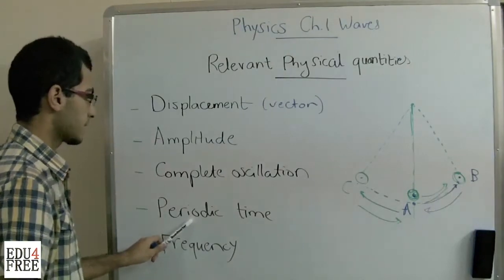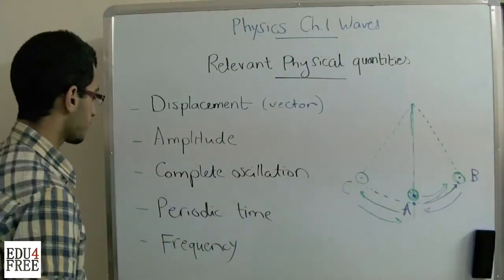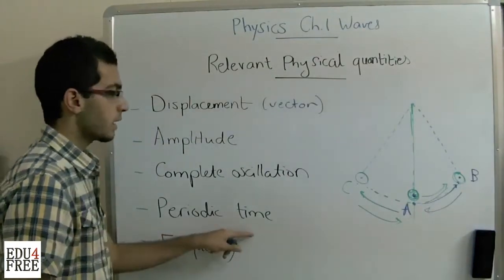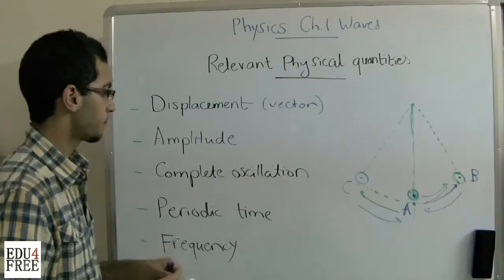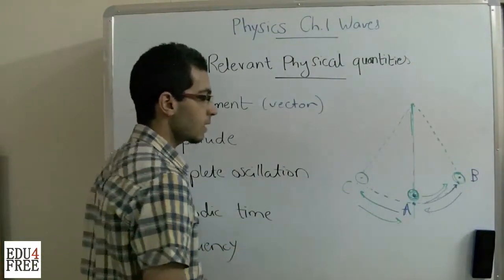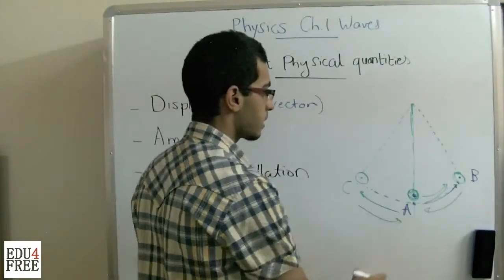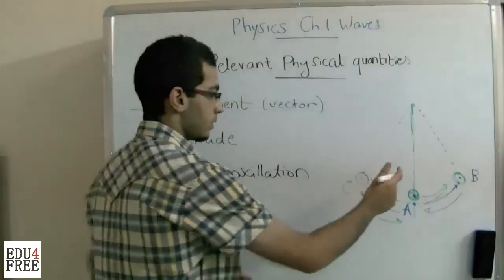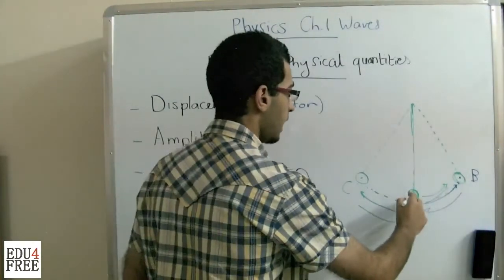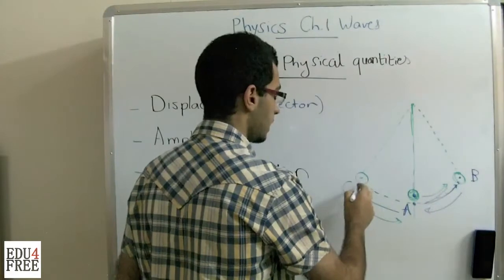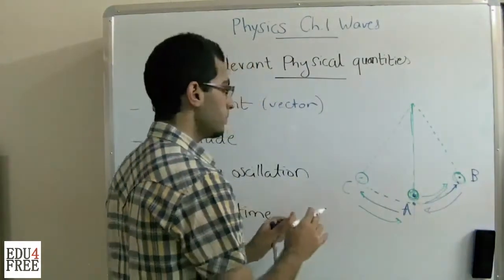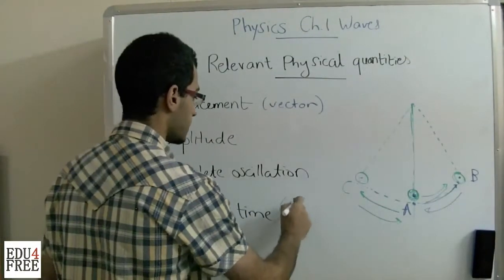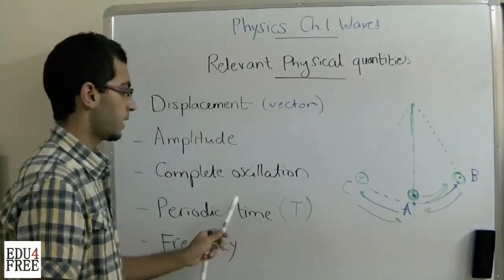The fourth physical quantity is the periodic time. The periodic time is the time needed by a vibrating object to make one complete oscillation. So the pendulum moves from A to B, from B to A, A to C, and C to A. The time taken by this process is called the periodic time, and we refer to it as T capital.